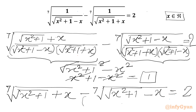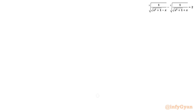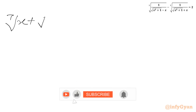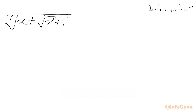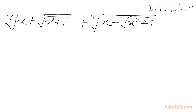Now we can take the minus sign into the radical. So we multiply inside the radical, and we get 7th root of (x + √(x² + 1)) plus 7th root of (x − √(x² + 1)) equal to 2.